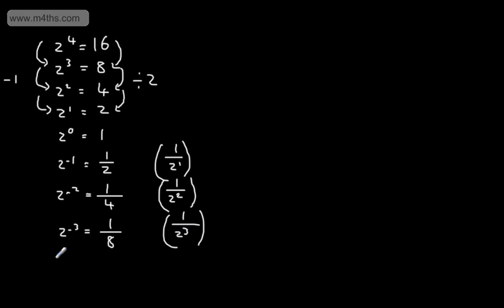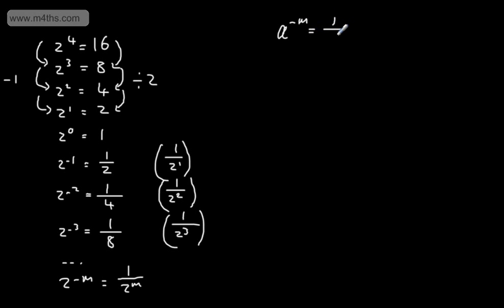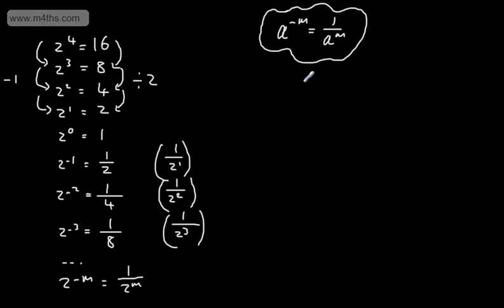If we continue this right up to 2 to the power of minus m, we would end up with the result 1 over 2 to the power of positive m. Our general result is: a raised to the power of minus m gives us 1 over a to the positive m. That's the result we're going to use to answer a range of questions.